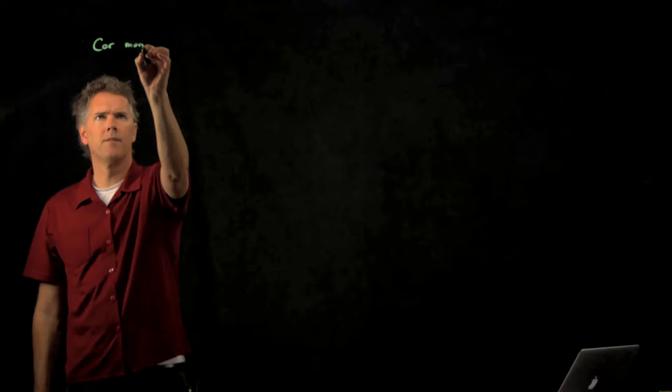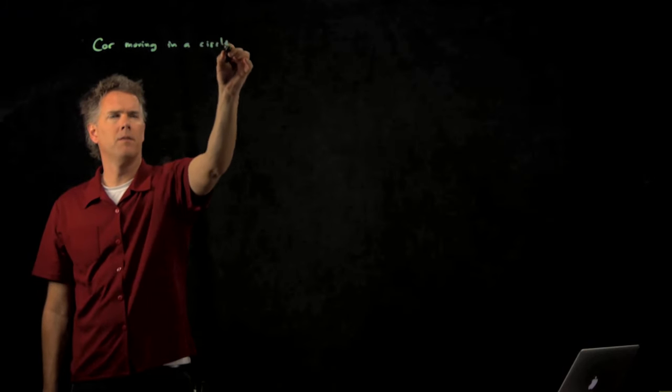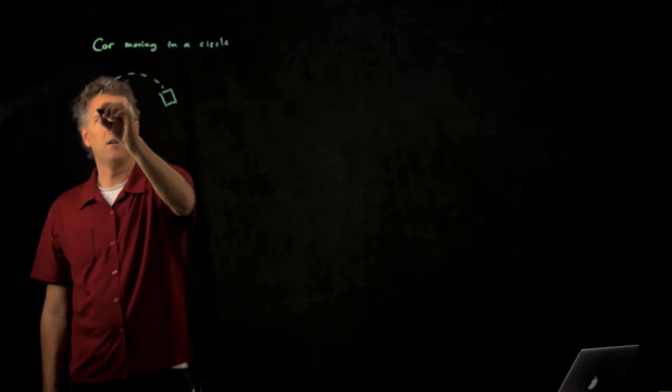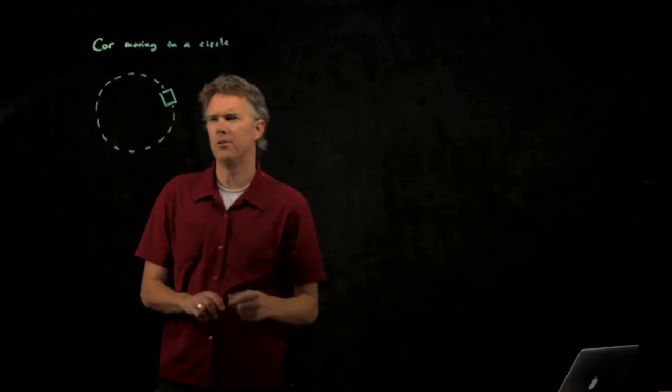So let's draw a top view of the car. We've got a car moving in a circle, here's our car, going around. This is the top view.